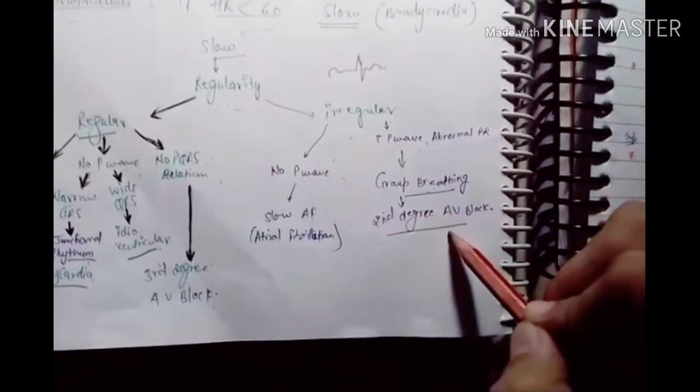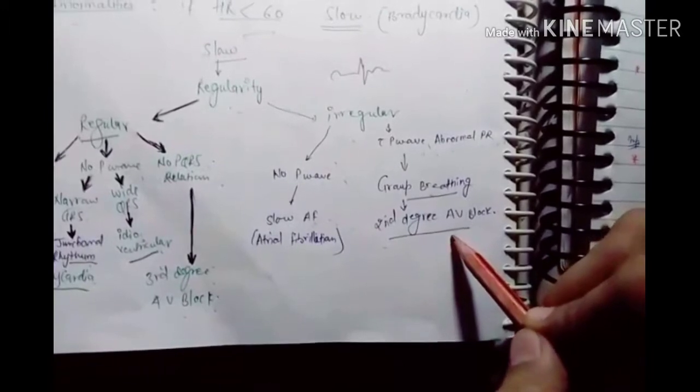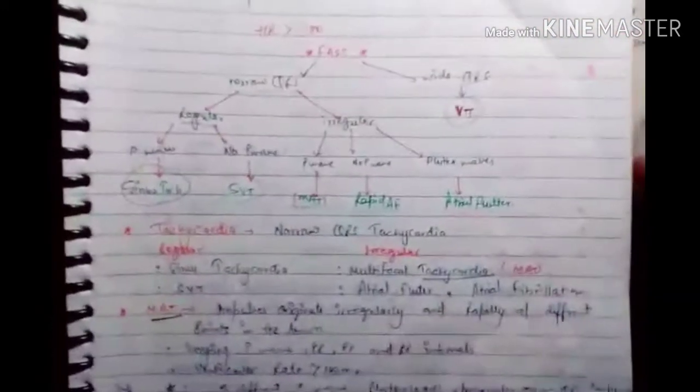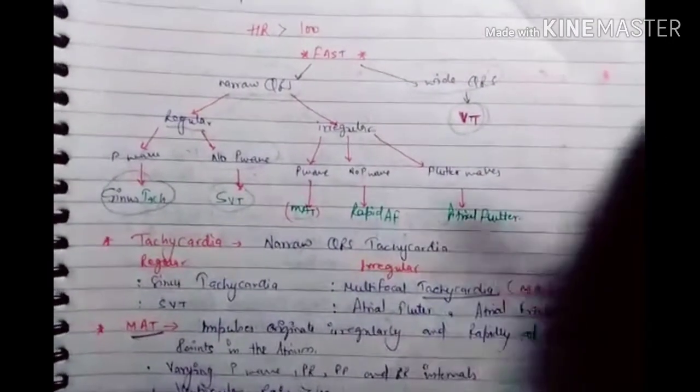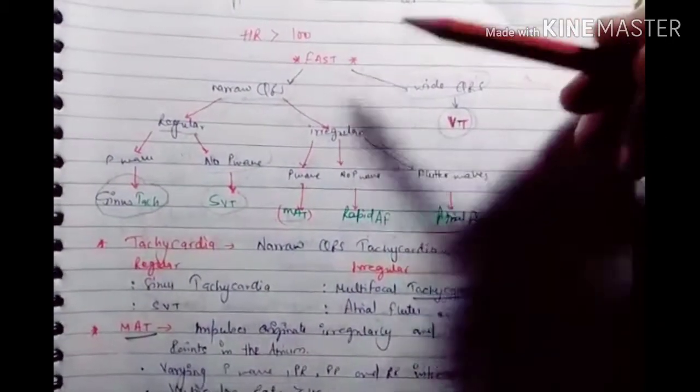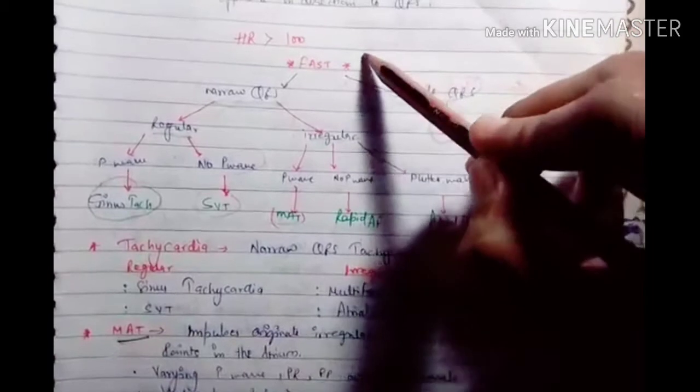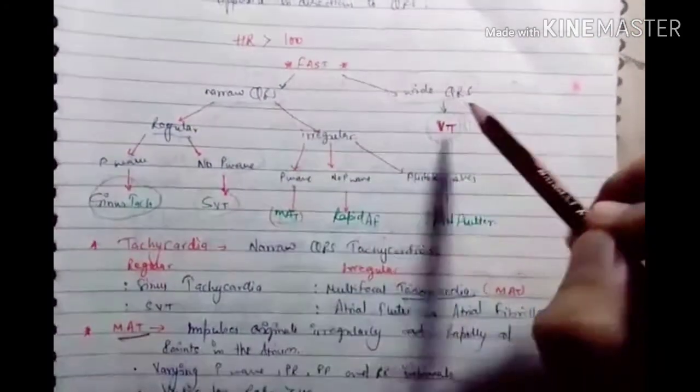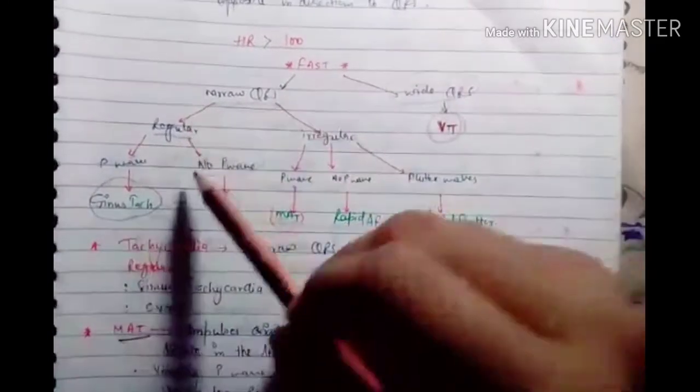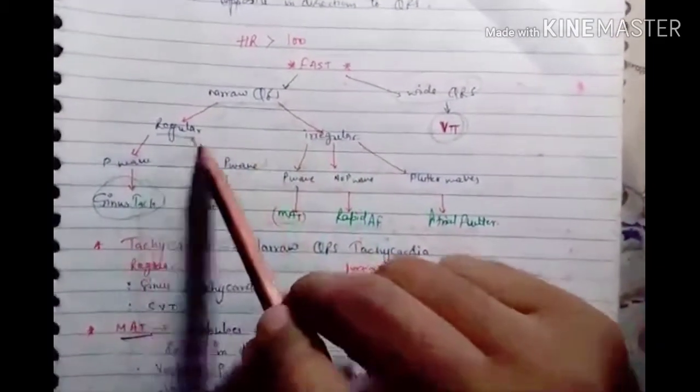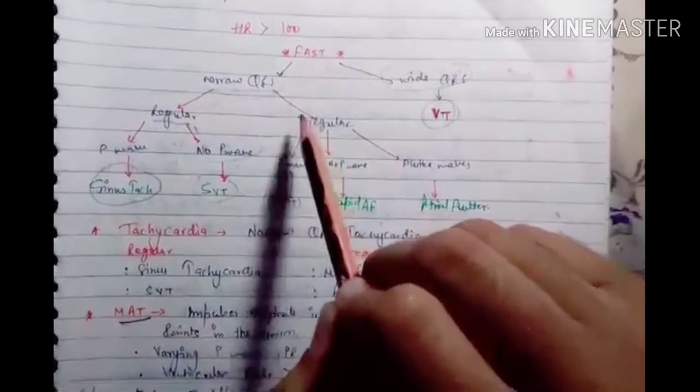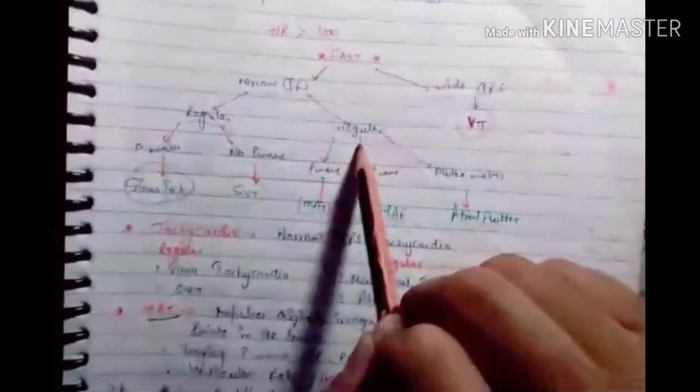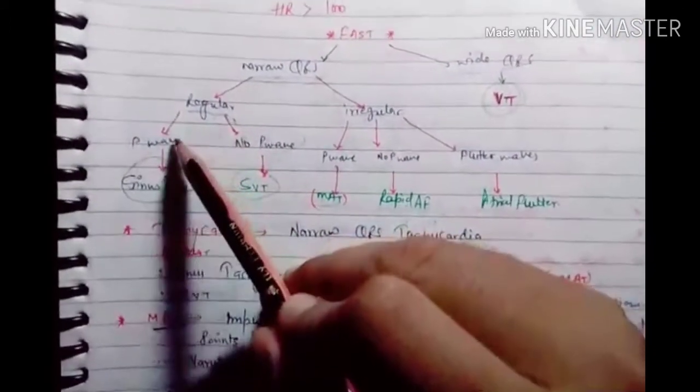Now we see the tachycardia. If more than 100 beats per minute, we consider tachycardia, it's very fast. There will be two types: either narrow QRS or wide QRS. In narrow we consider two types, we have to check regularity or irregularity, regular or irregular.